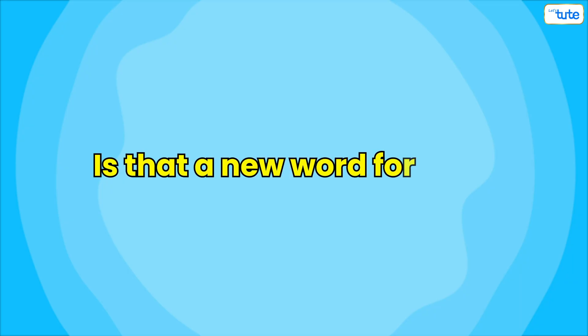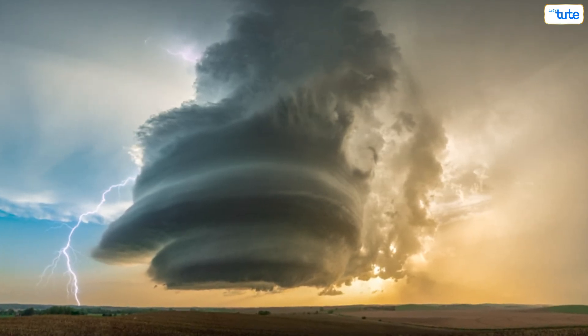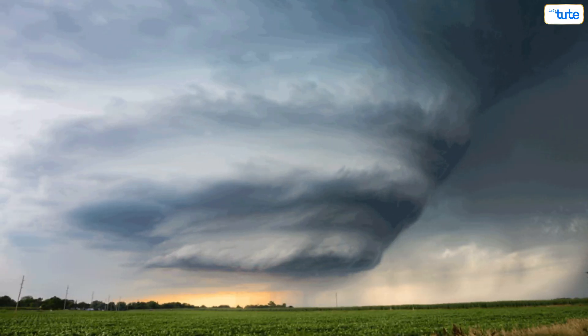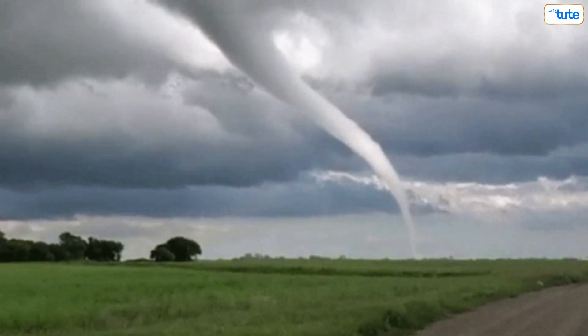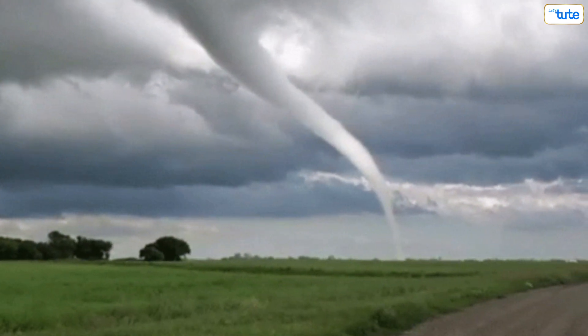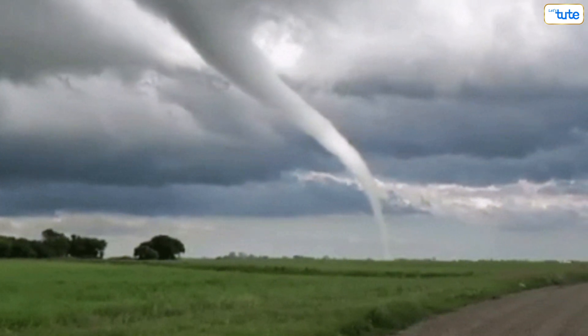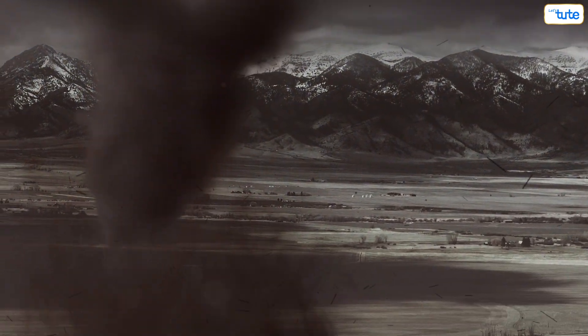Is that a new word for you? I'll show you what it is. A mesocyclone is a rapidly rotating air mass in a thunderstorm. It looks like a vortex of air spinning at extremely high speeds. As the mesocyclone intensifies, the rotating air lowers and extends downwards, starting to create a column of rotating air. This is when the tornado is born.